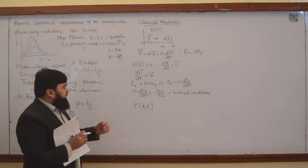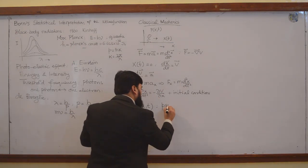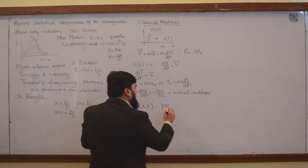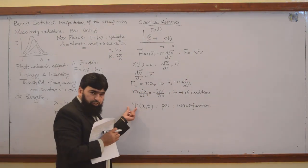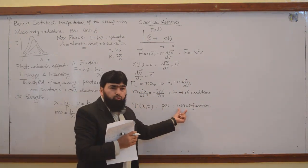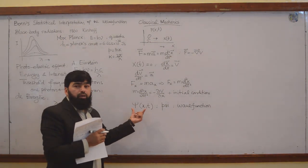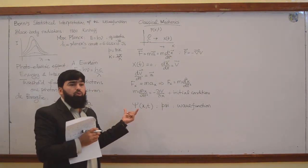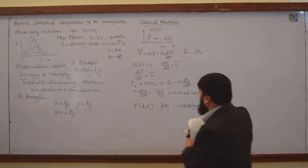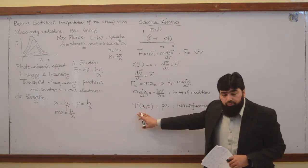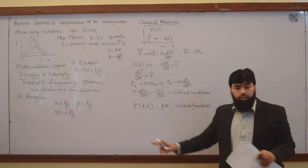A quantum mechanical particle is described by psi(x, t). This we call psi, written with the psi symbol, and we call this the wave function. It is given a specific name — wave function — because it will have some wave properties. This psi(x, t) will actually have all the information which our quantum mechanical particle requires, with respect to position x and with respect to time t.